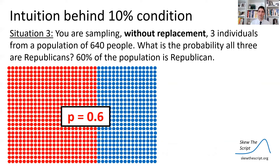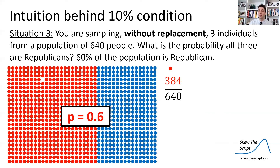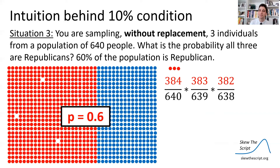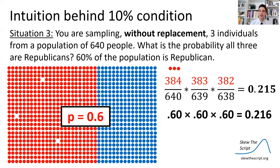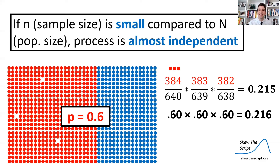Now imagine a third situation: sampling without replacement again, three individuals, but from a population of 640 people. The same proportion — 60% — so 384 of the 640 are Republican. The probability of getting the first Republican is 384/640. Set that person aside — now 639 people remain, 383 Republicans, so the probability of the next is 383/639. Subtract one again for the third. We end up with a probability of about 0.215. Note these events are dependent, but the final probability is very similar to the independent with-replacement case — because when our sample is so much smaller than the population, the effect of early outcomes on later ones is very small.